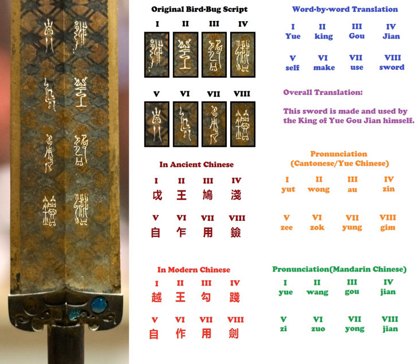Seal script evolved from oracle bone script and diverged into different forms in the Spring and Autumn period, after the power of the Zhou dynasty waned and China began to divide into different states. This kind of seal script first appeared in the middle era of the Spring and Autumn period, then became popular during the late Spring and Autumn period, and was most popular during the Warring States period. It was often seen in southern kingdoms.